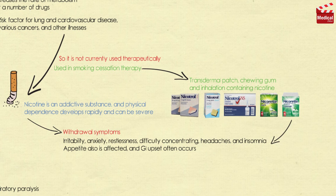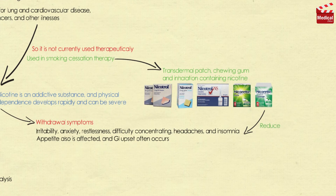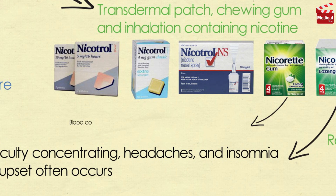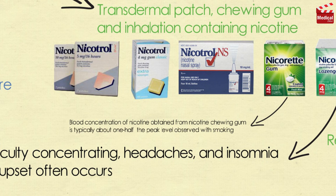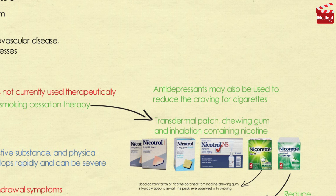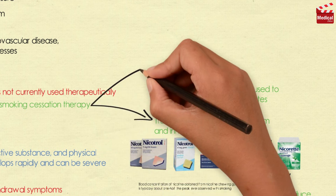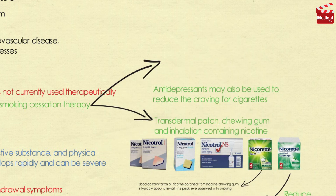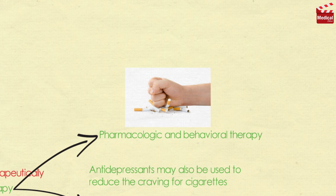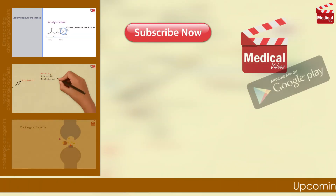The transdermal patch, chewing gum, lozenges, and inhalation products containing nicotine — such as Nicotrol and Nicorette — have been shown to reduce nicotine withdrawal symptoms and to help smokers stop smoking. For example, the blood concentration of nicotine obtained from nicotine chewing gum is typically about one half the peak level observed with smoking. Antidepressants may also be used to reduce the craving for cigarettes. Smoking cessation programs that combine pharmacologic and behavioral therapy are the most successful in helping individuals to stop smoking.